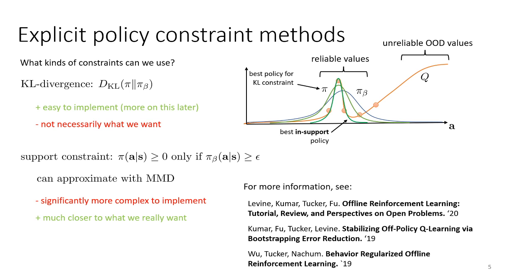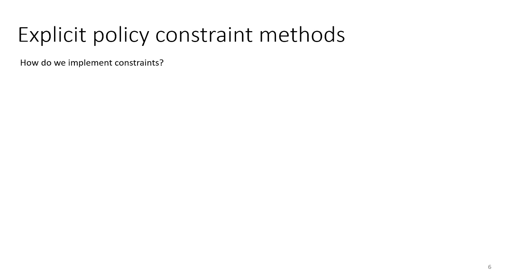If you want to learn more, here are three papers I'd recommend: a survey review paper and two that discuss various kinds of constraints. Most of our discussion today will focus on simpler types of constraints. I'll cover an overview of methods that enforce constraints explicitly, then a deep dive into methods that enforce constraints implicitly — which can be very effective and simple in practice. The explicit methods are generally not the ones that work well, but it's good to understand them.